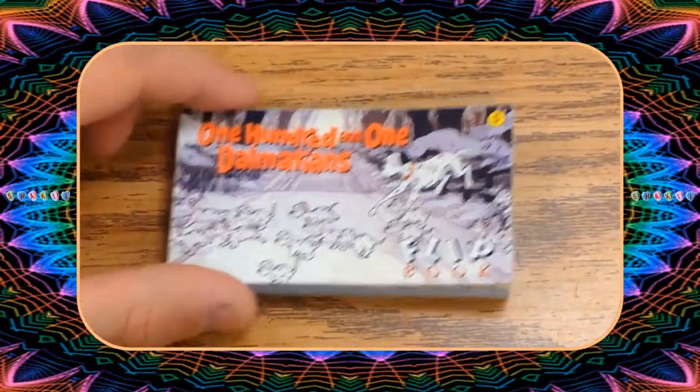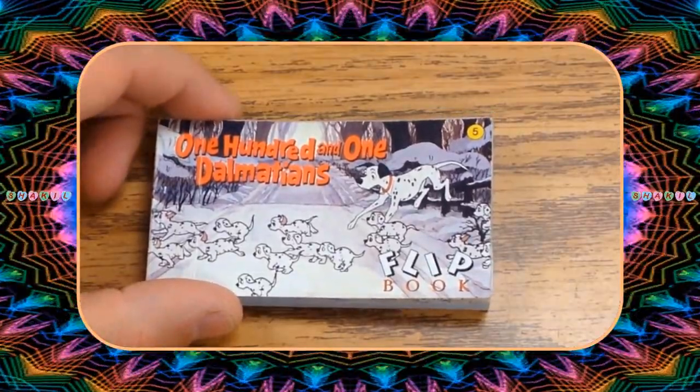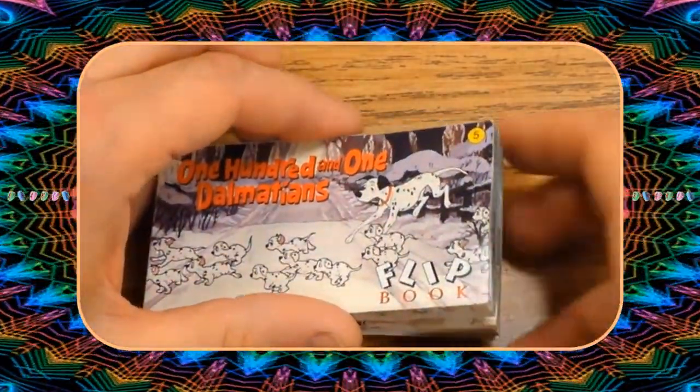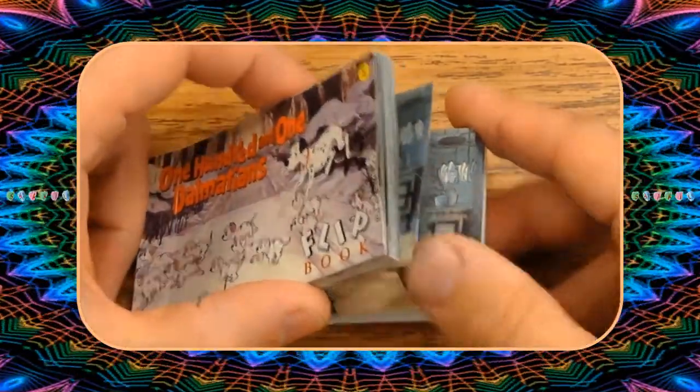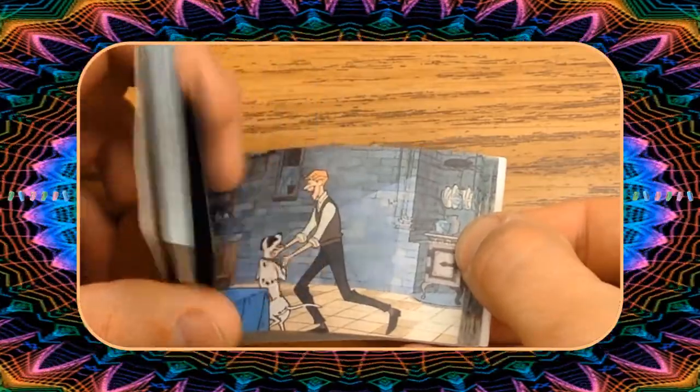A flipbook is another way to use the optical illusion of running many images quickly by you to create some motion. So if you have just slight changes in each picture.